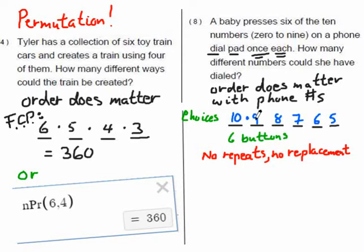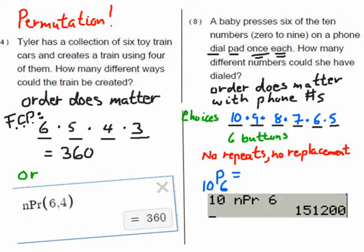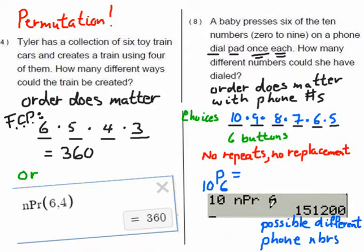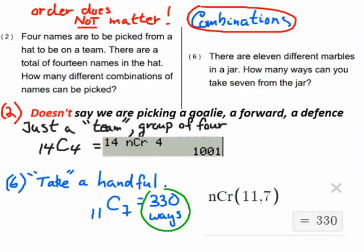There are ten choices for the first button, then nine, then eight, then seven, then six, then five — multiply all those together and you get a big number. I'll just use the button on my calculator: ten permute six. That's 10 different things, selecting 6 in order without reuse — that gives 151,200 different ways.